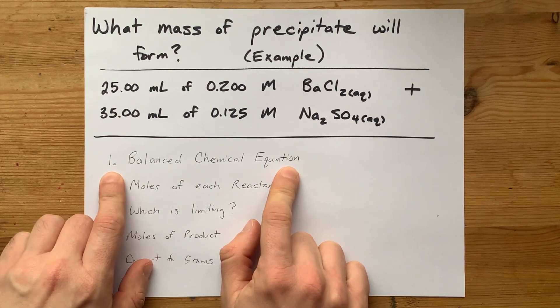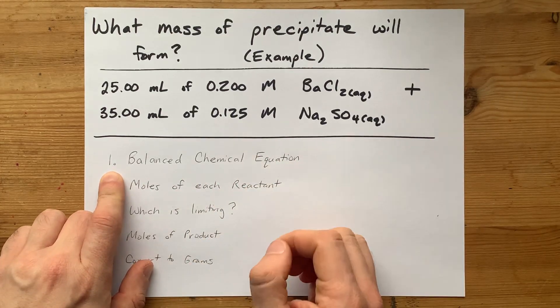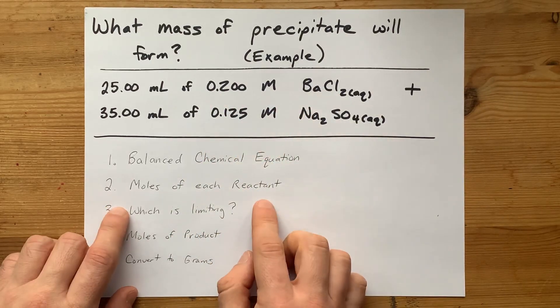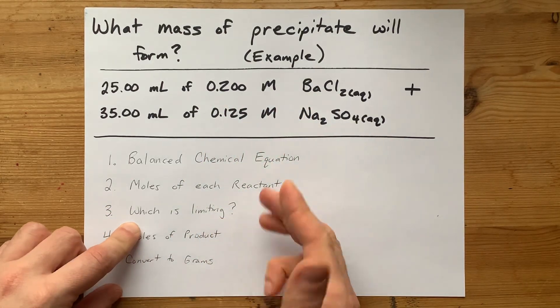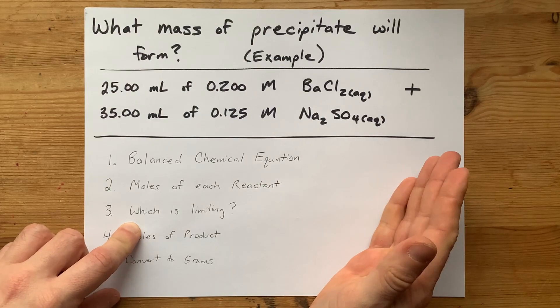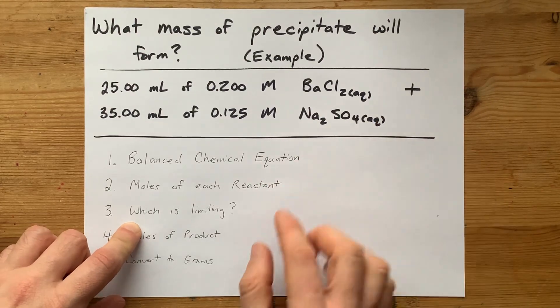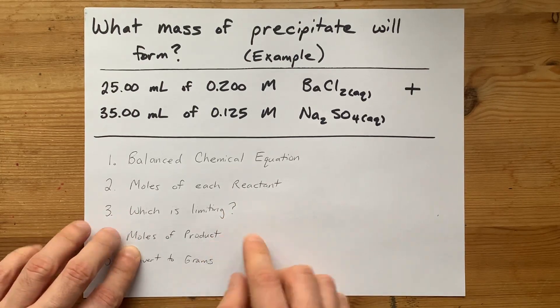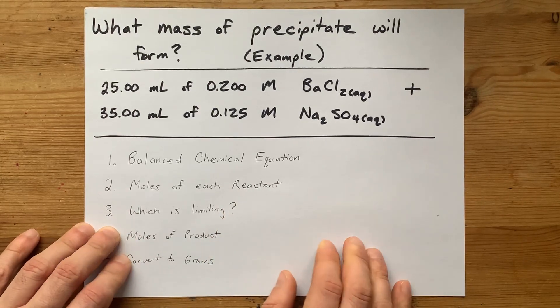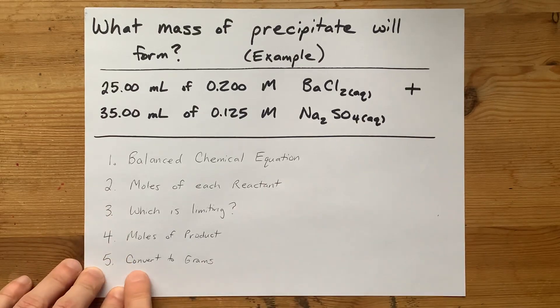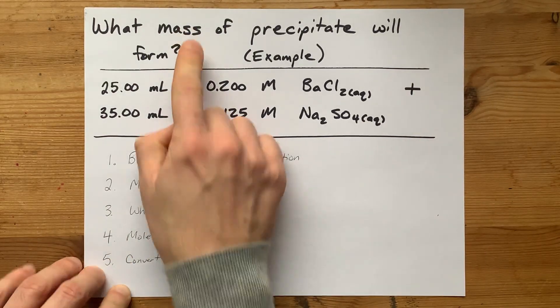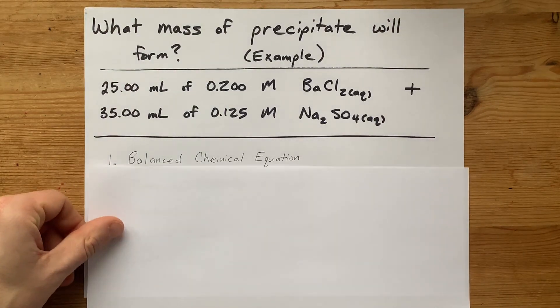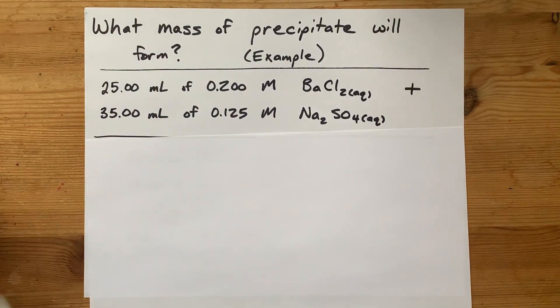How do you figure out how many grams of that solid will form? You make a balanced chemical equation to figure out what the solid is. You figure out how many moles of each of these reactants you have. You'll have to figure out which one is the limiting reactant or reagent, depending on what your teacher calls it. You're going to use that to figure out how many moles of that solid product you'll end up with. And then you'll have to convert that to grams because it asks you for the mass of precipitate.